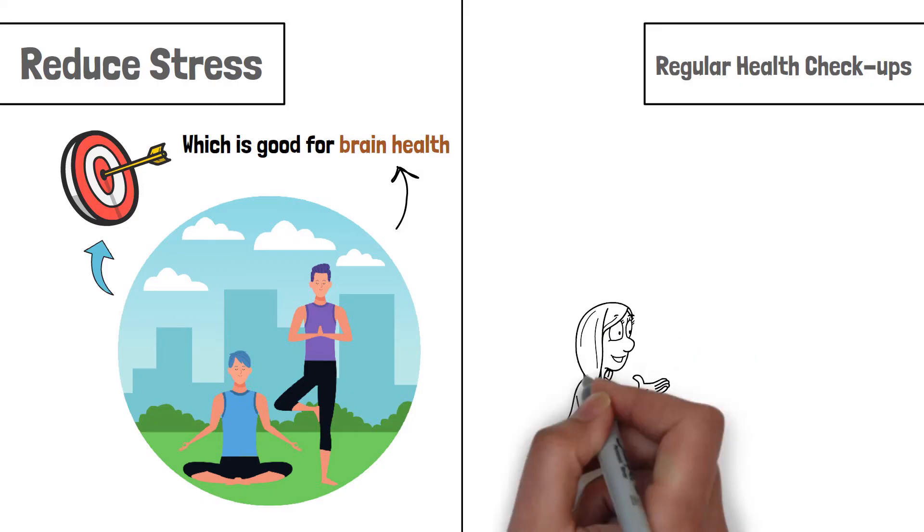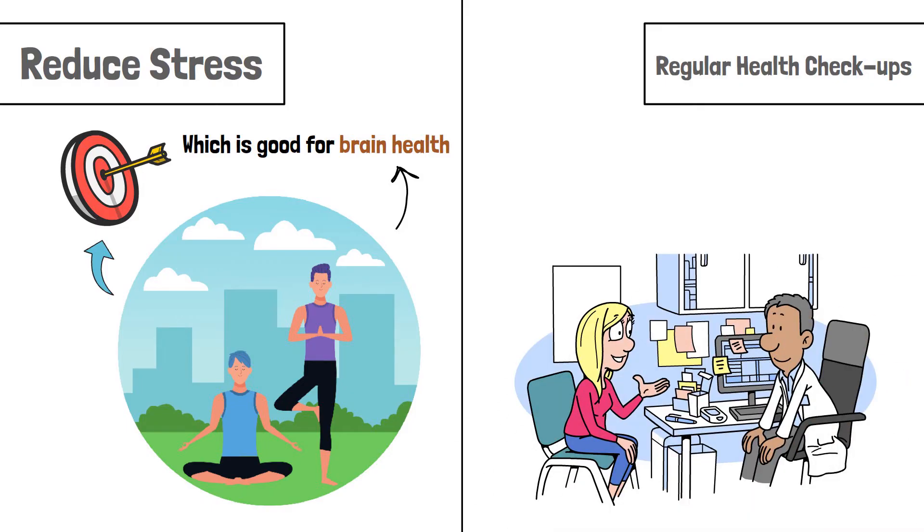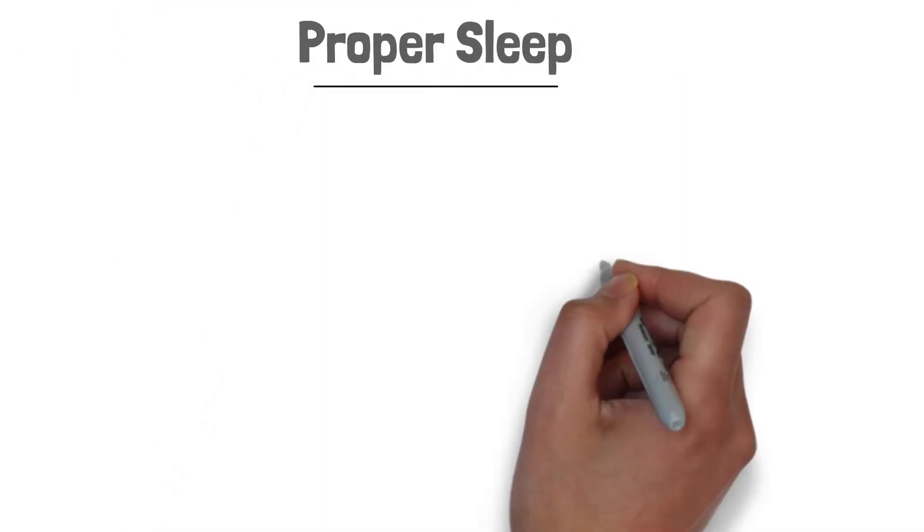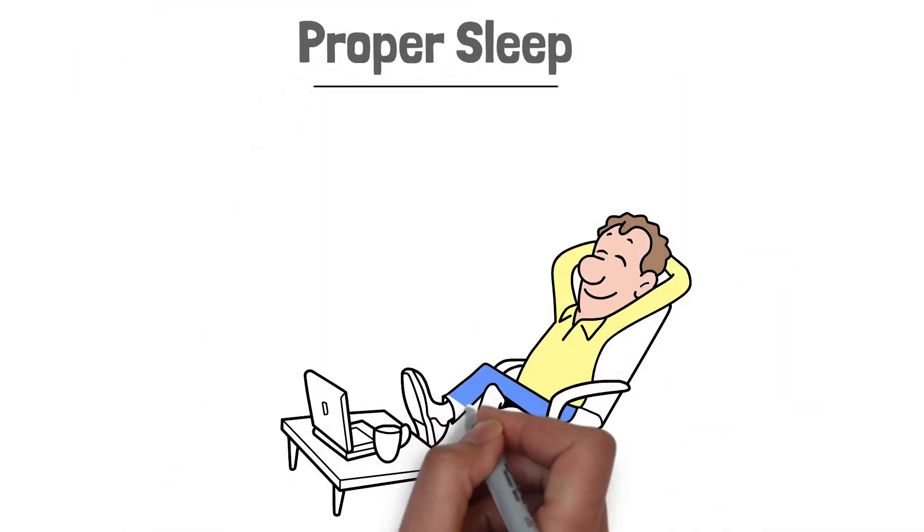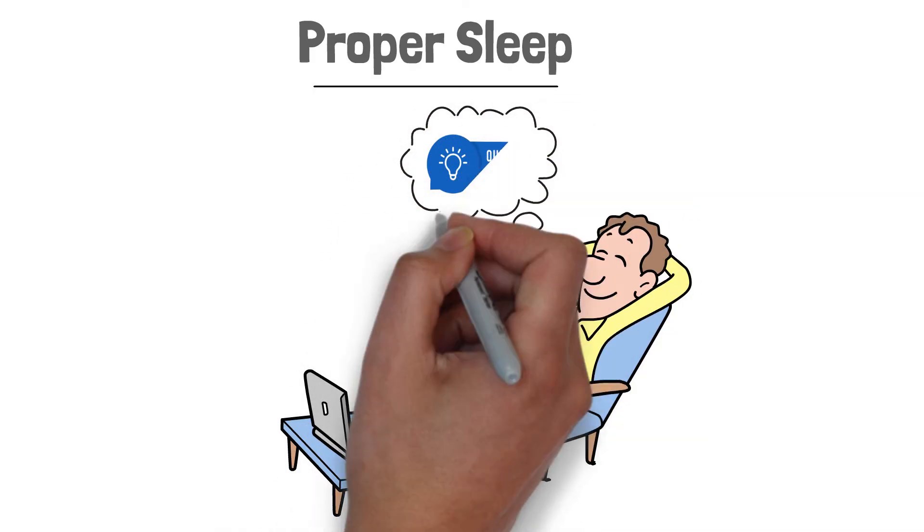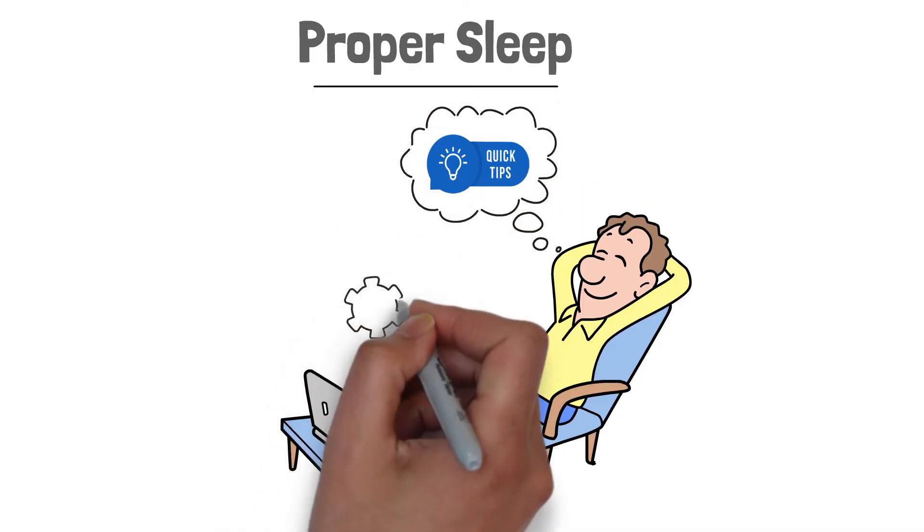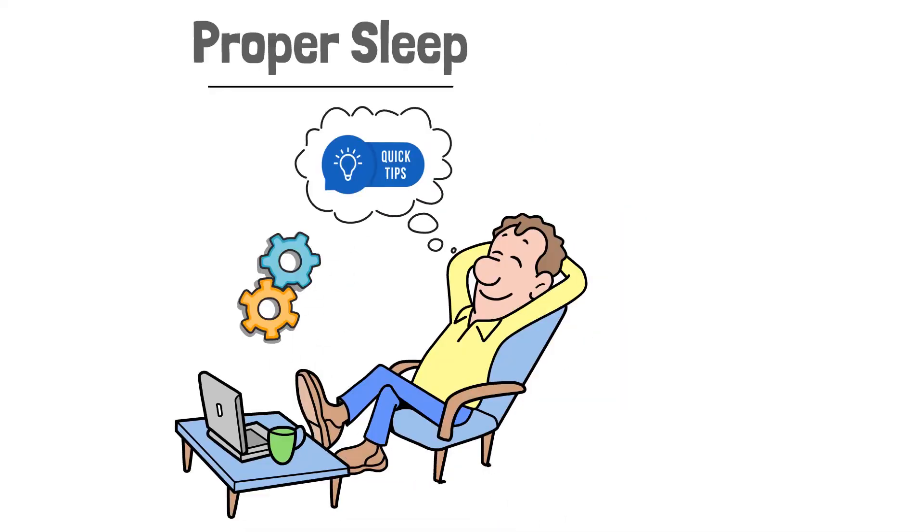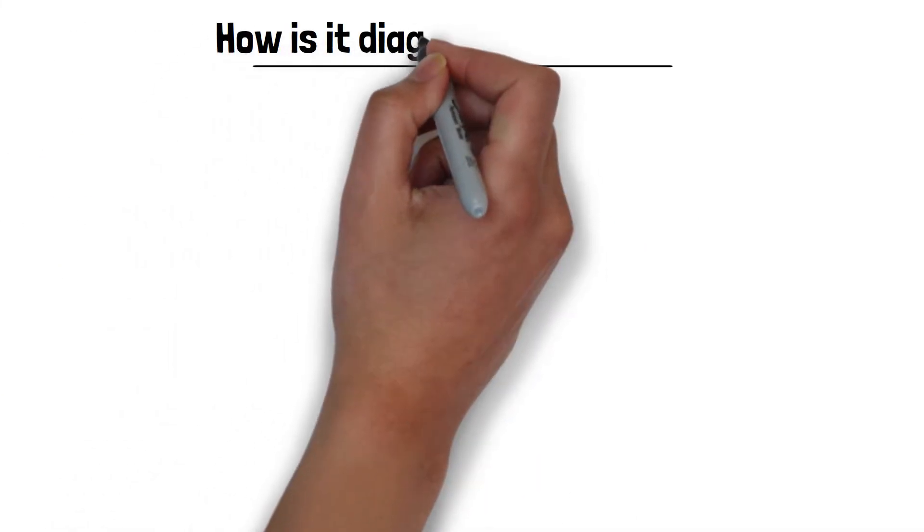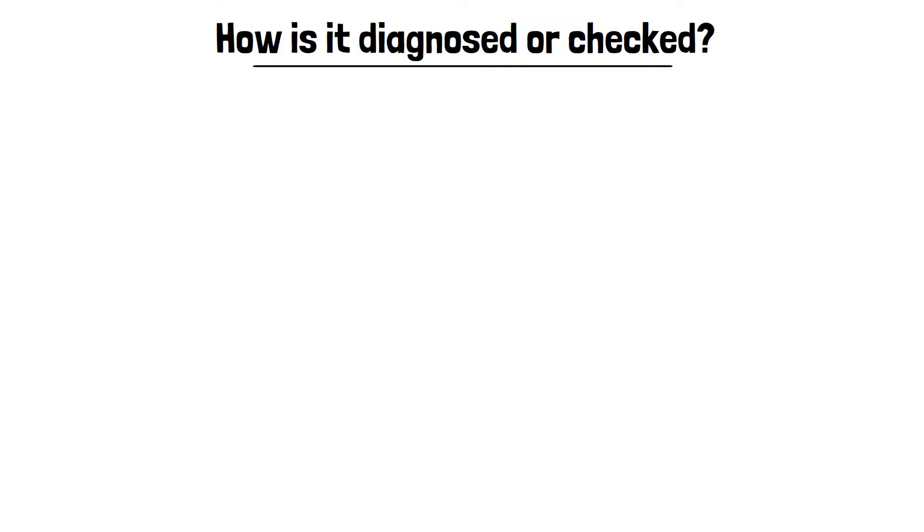Regular health checkups. Keep having health checkups regularly with a doctor, especially if you feel you fall into any risk factors. Proper sleep. Getting good and complete sleep is also crucial for brain health. Friends, these were some tips by following which you can prevent its occurrence. Now, let's move on to the next point, where we will see how its diagnosis or testing is done.